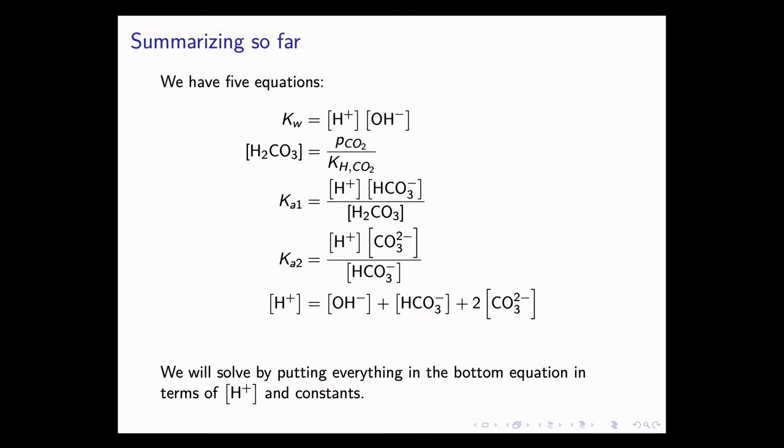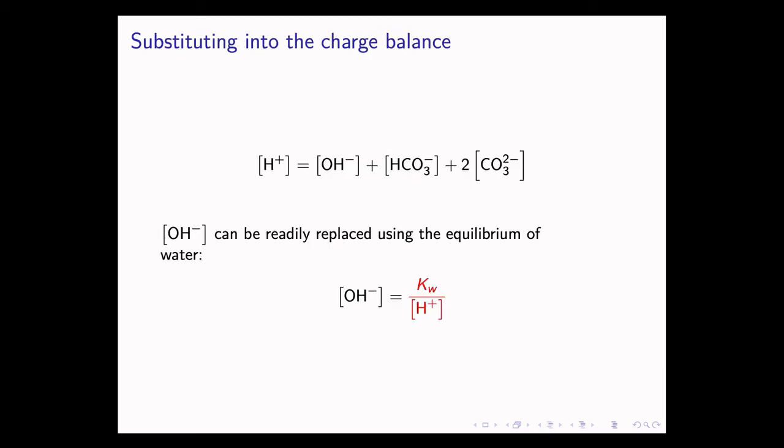So summarizing everything so far, we have five equations, which is, as you recall, what we need to solve a system with five unknowns. Four of the equations come from equilibrium. The last one comes from charge balance. And we're going to solve everything by putting all the different terms in the bottom equation in terms of H+ and the constants Ka1, Ka2, Kw, and KhCO2. The first term we want to replace is the OH- term. And this can be easily replaced using the equilibrium of water. So OH- is simply equal to the constant Kw divided by H+.